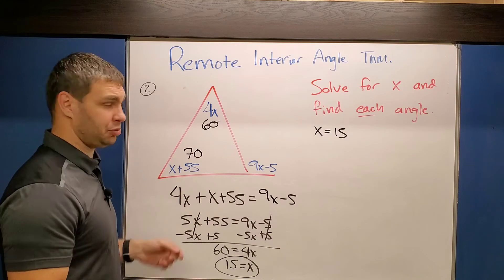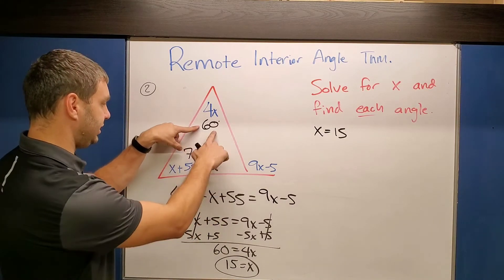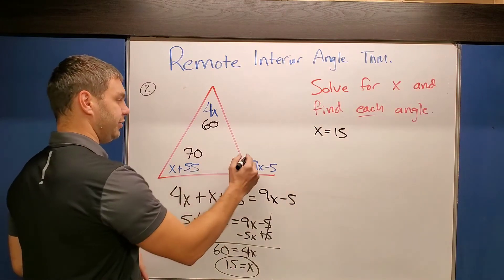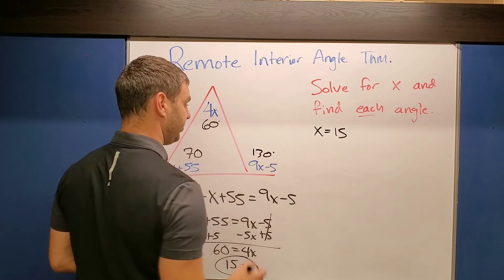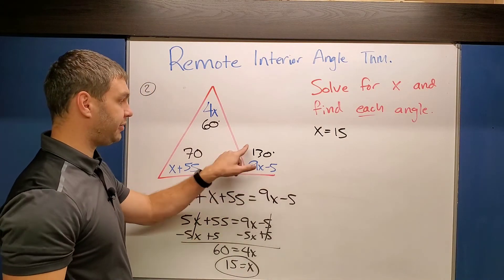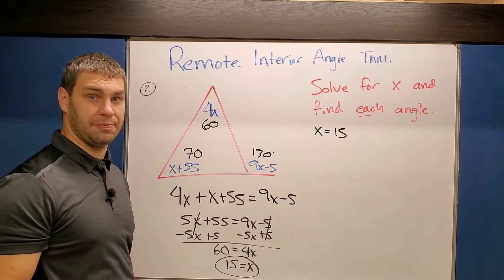Now we can also apply the same rule once we know what they are. Right, 60 plus 70 is also going to equal my exterior angle. And 60 plus 70 of course is 130 degrees. Let's see if it works: 9 times 15 is 135, 135 minus 5 of course is 130.